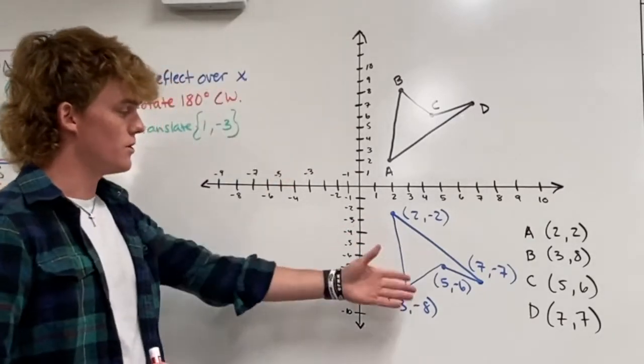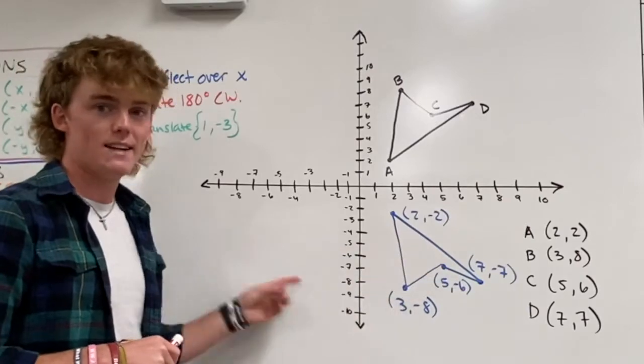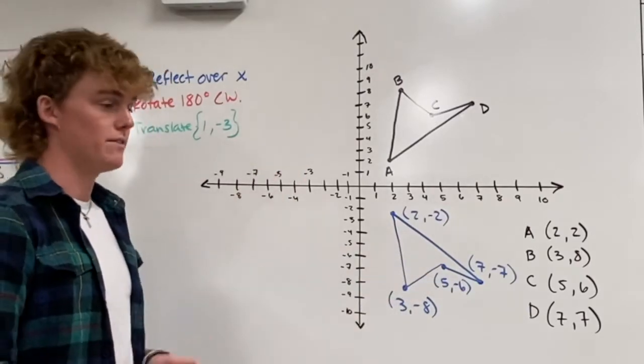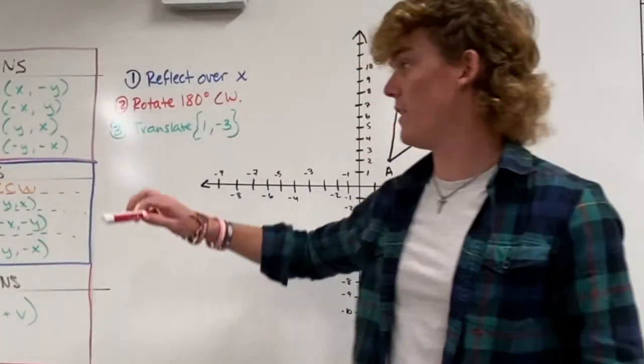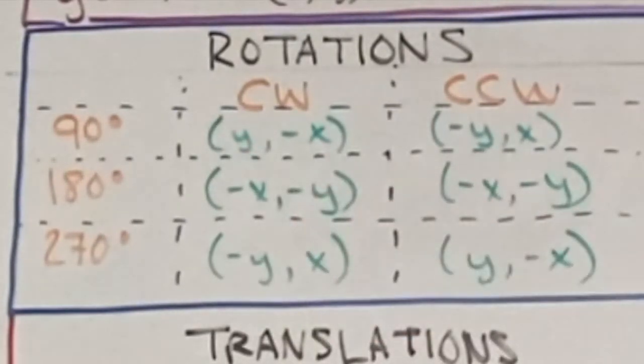So next we're going to rotate this image 180 degrees clockwise, so two 90-degree rotations or half of a full circle. To do that we're going to follow this pattern again: 180 degrees clockwise we just have to change the sign of both our x and our y.